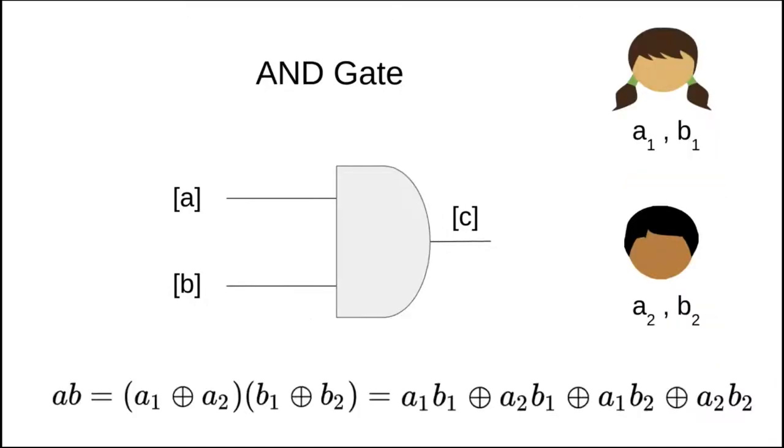While XOR gates are essentially free, AND gates require the use of expensive interactive primitives. At the bottom of the slide, we see that after expanding the multiplication of AB, we get four terms. The first term, A1 B1, and the last term, A2 B2, are evaluated by Alice and Bob locally. The middle two terms require communication.